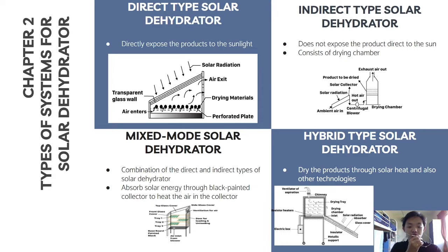The third type is the mixed-mode solar dehydrator, a passive system combining the above two types. Solar heat is absorbed by an internal black panel collector, heating the air in the collector, so dehydration is carried out by both direct solar radiation on the product and heated air simultaneously. The fourth type is the hybrid solar dehydrator, which incorporates other technologies alongside solar heat. It consists of a solar collector, a heat exchanger that stores energy, and a drying chamber. During the daytime it functions as a dehydrator, but also stores heat energy that can be used after sunshine hours, producing better quality products in shorter drying times.